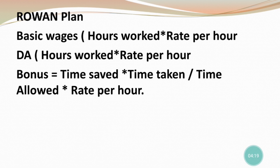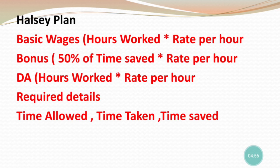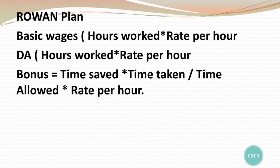Now the Rowan formula. Basic wages remain the same: hours worked × rate per hour. Dearness allowance is also hours worked × rate per hour. For the bonus in Rowan's plan: time saved × (time taken ÷ time allowed) × rate per hour. This bonus formula is a little tricky compared to Halsey.